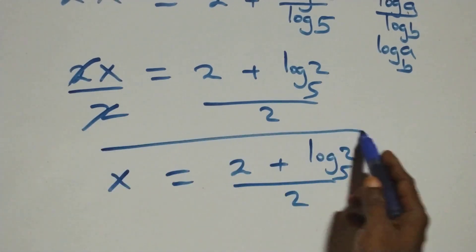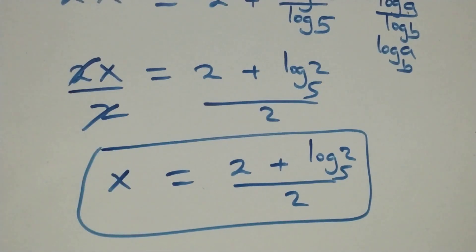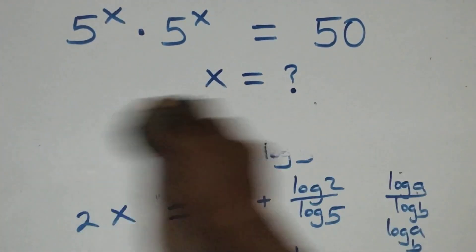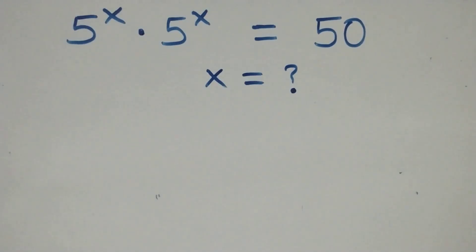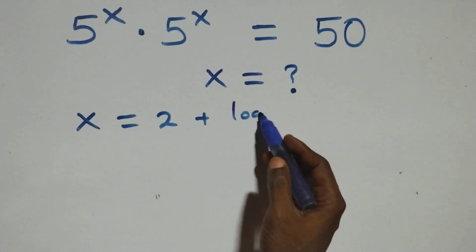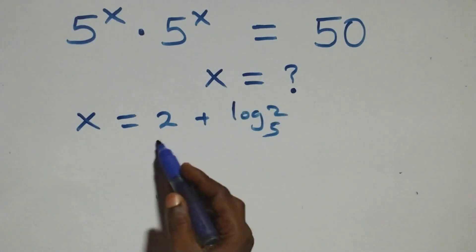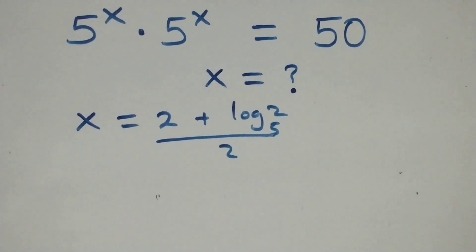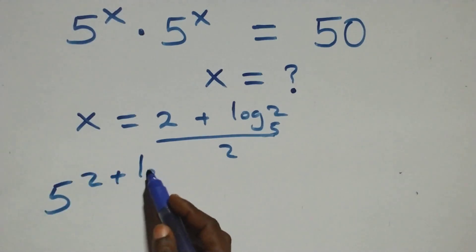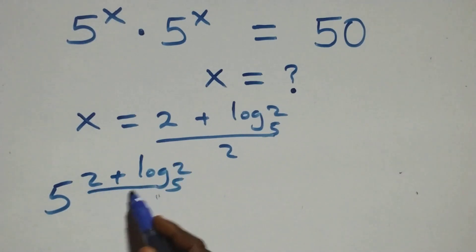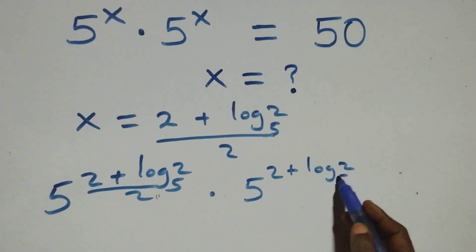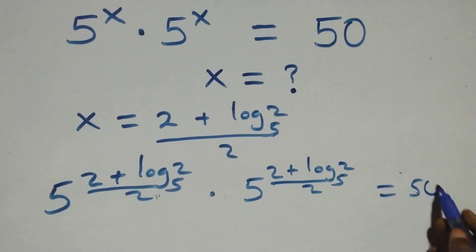The value of x is 2 plus log 2 base 5, all over 2. Let's check whether this satisfies the given problem. We substitute the value of x, which is (2 plus log 2 base 5) over 2, back into the equation: 5 to the power x times 5 to the power x equals 50.